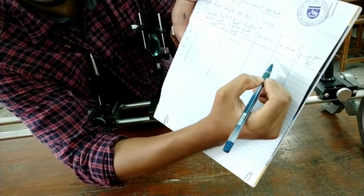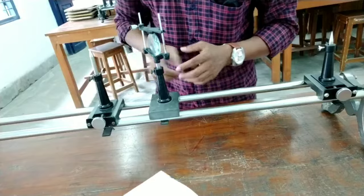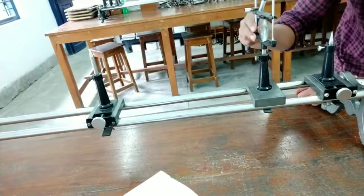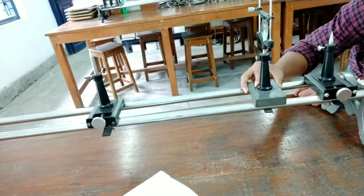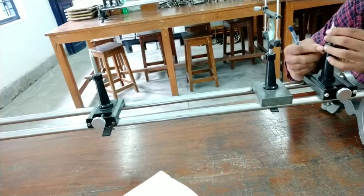This is the same reading. Now I will take the second reading when the lens is placed near the object pin. Okay, now I am removing the parallax when the lens is placed near the object pin.